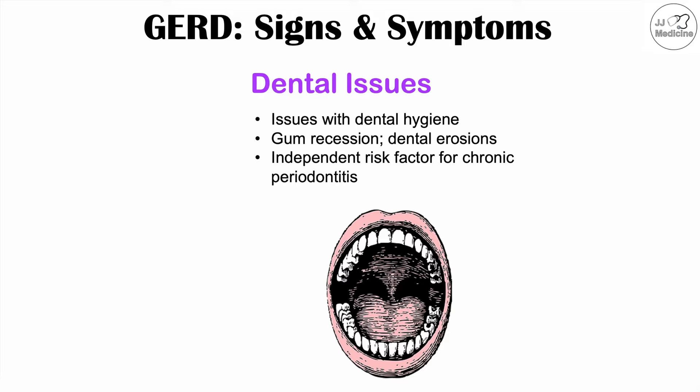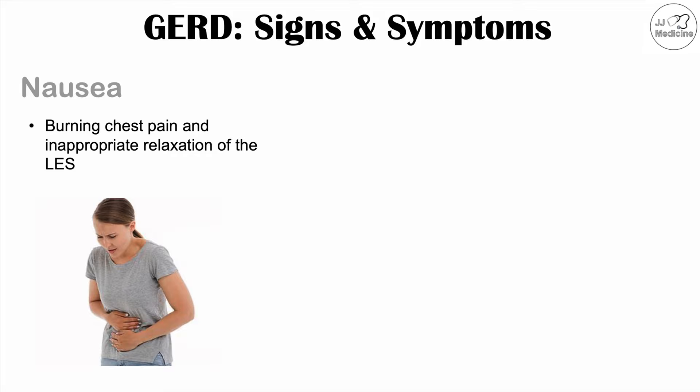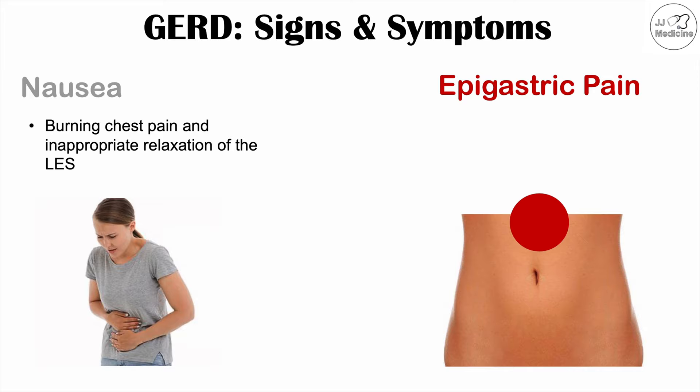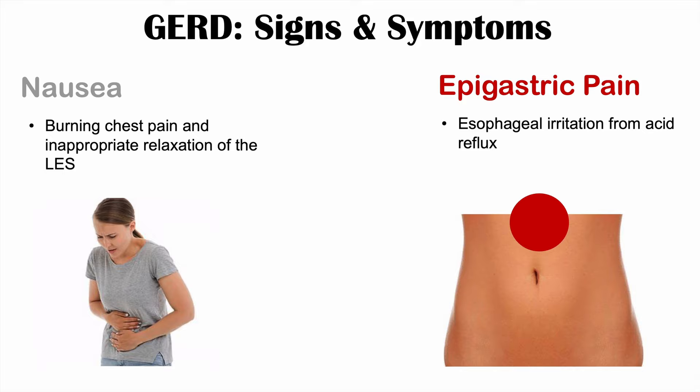Other signs and symptoms of GERD include nausea, which can be caused by the burning chest pain or the inappropriate relaxation of the LES. Individuals with GERD can also note epigastric pain — pain in the center of the abdomen above the belly button — which can be due to esophageal irritation from acid reflux.